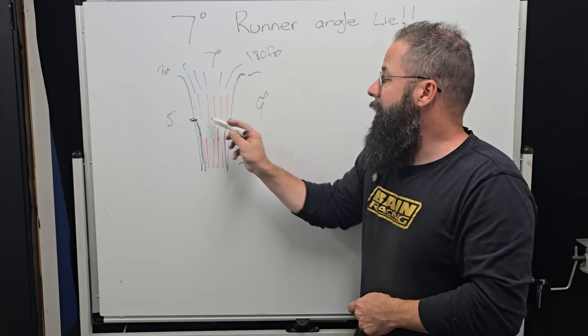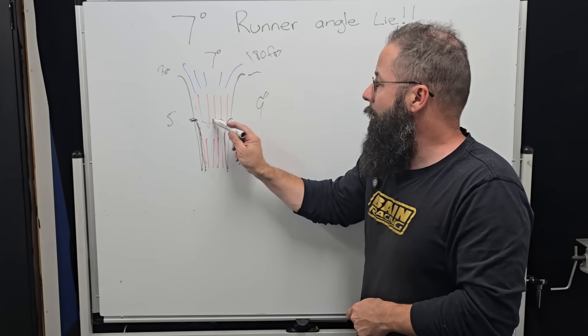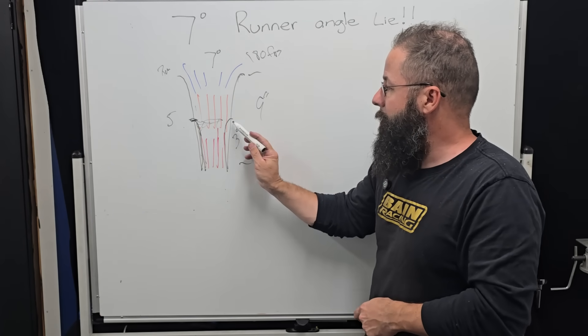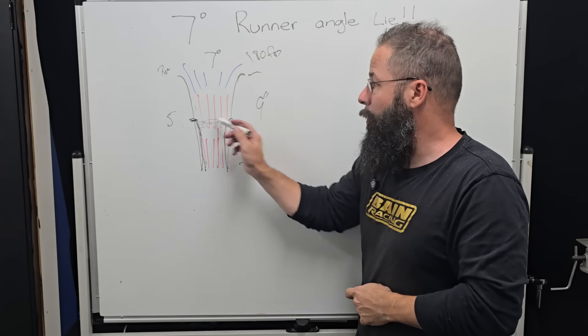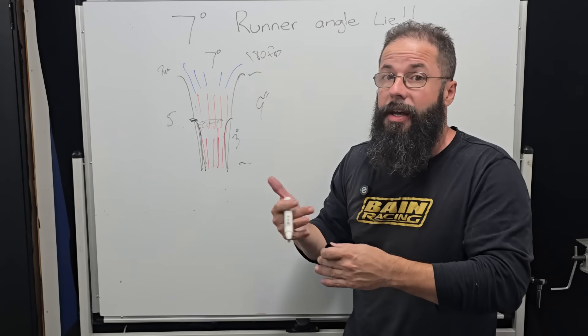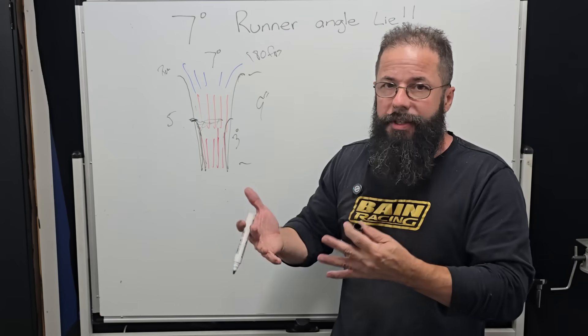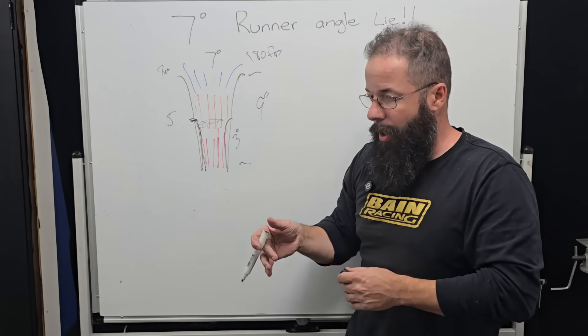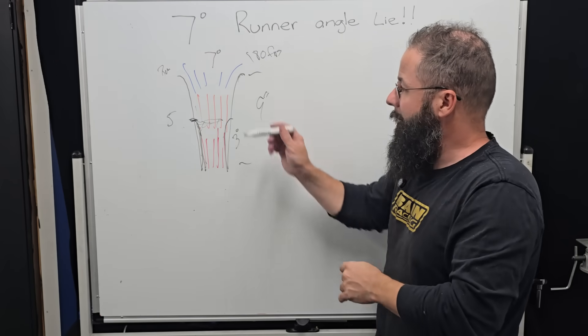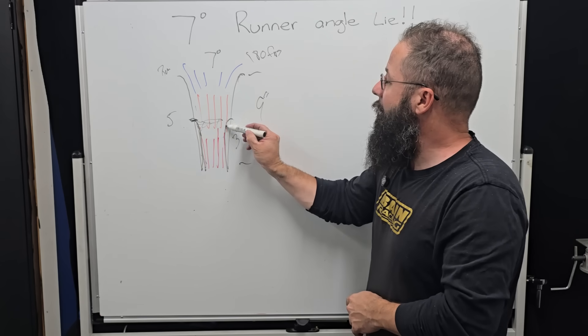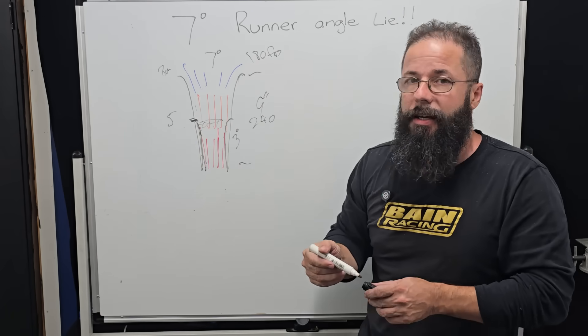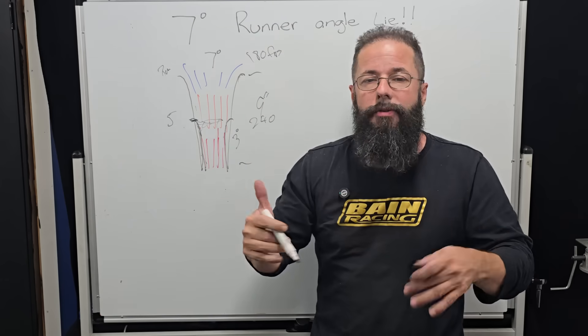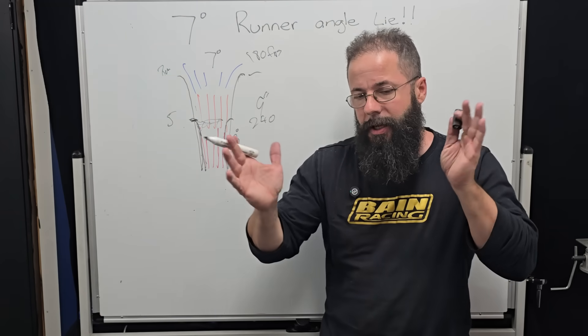So if that's seven degrees and it's at 180 feet per second, then we might be on that 8 mil, 5/16ths radius. But now we have to run a shorter runner, now we're running at five inches. So now our entry airspeed, because we've also chosen a different angle because we're trying to get this to actually work and fill the cylinder similar to what the longer runner would have, but we don't have that inertial length now.